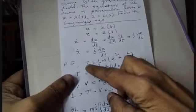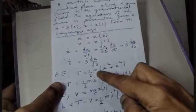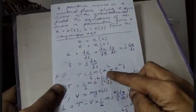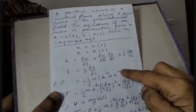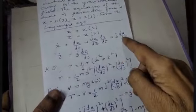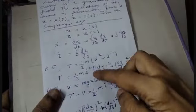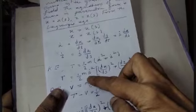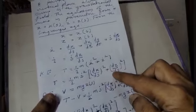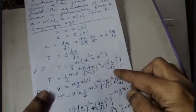The kinetic energy of the particle T equals one-half mv². That is, T equals one-half m(x-dot² + z-dot²), which gives T equals one-half m ṡ² times [(dx/ds)² + (dz/ds)²].